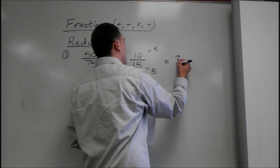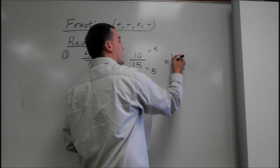So, 10 divided by 5 is 2. And 15 divided by 5 is 3. So that would be it.